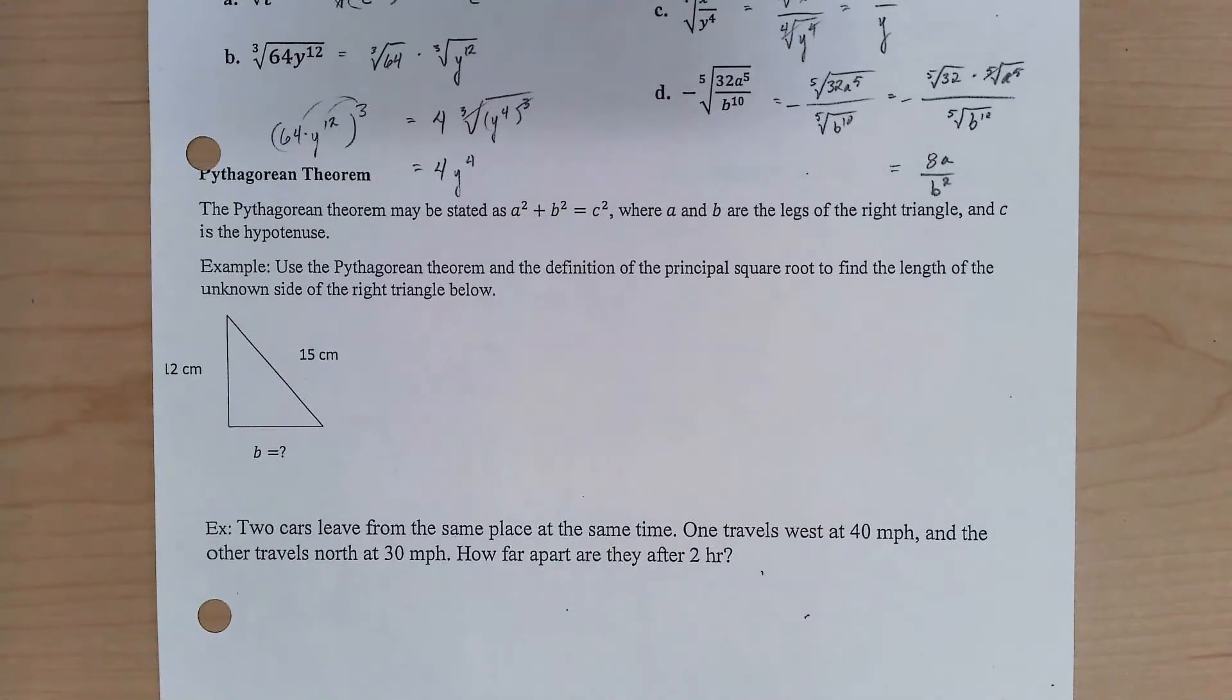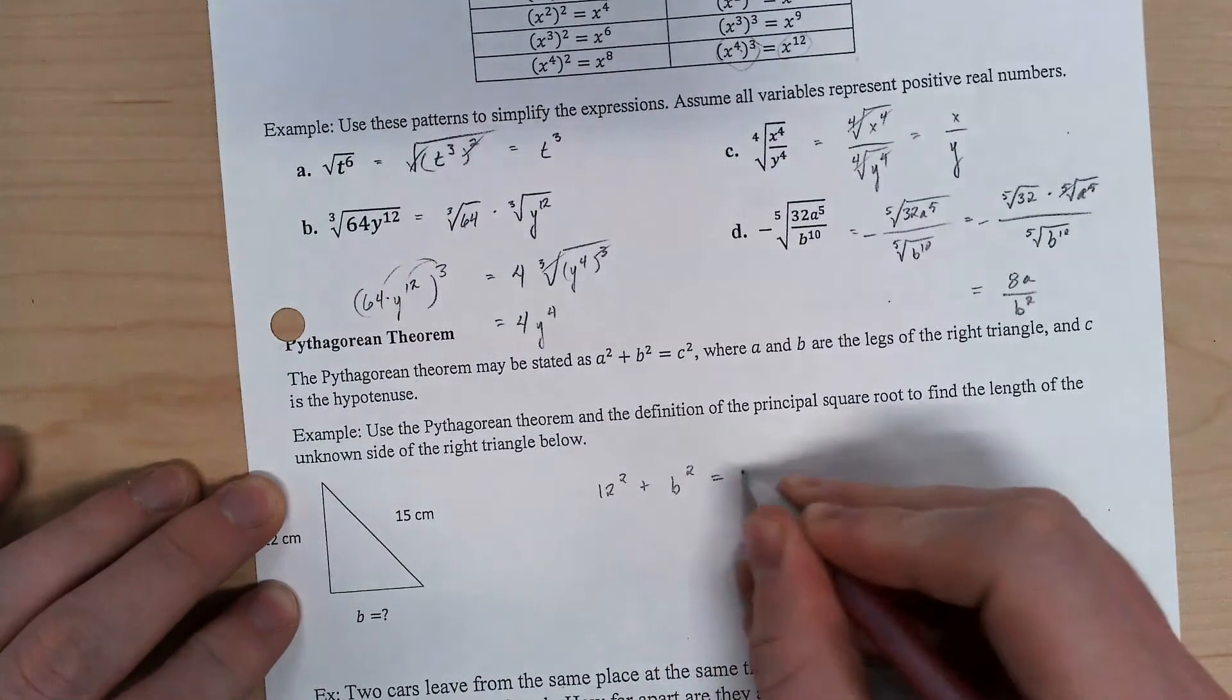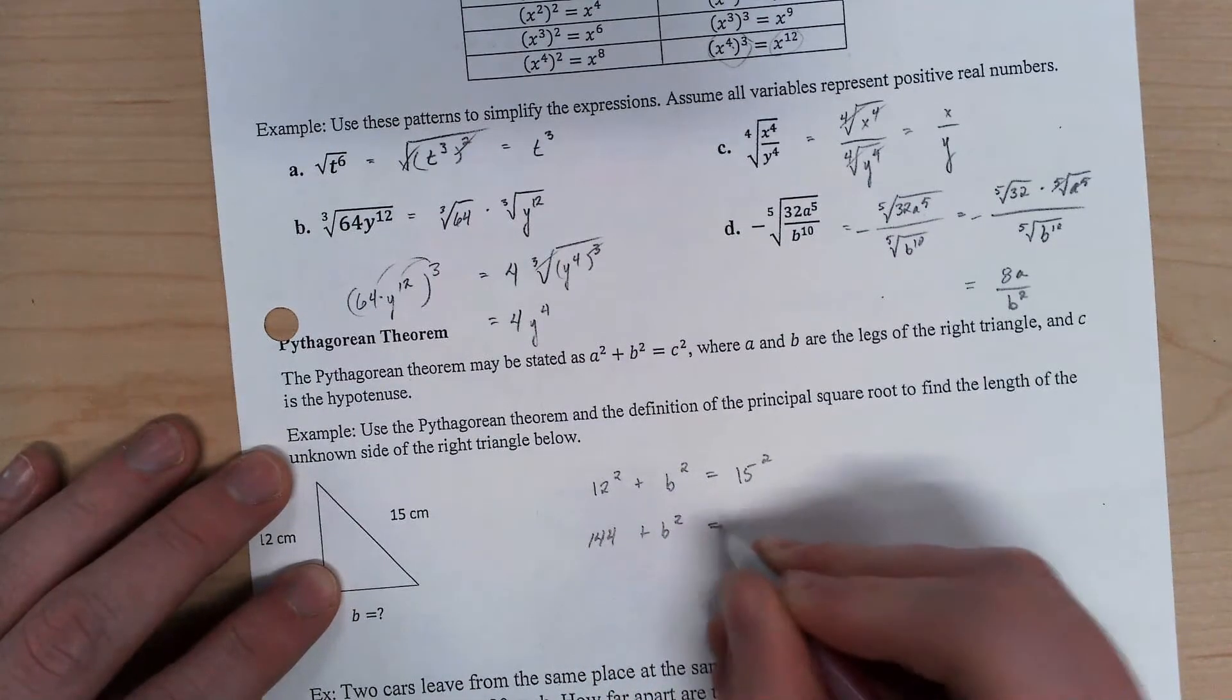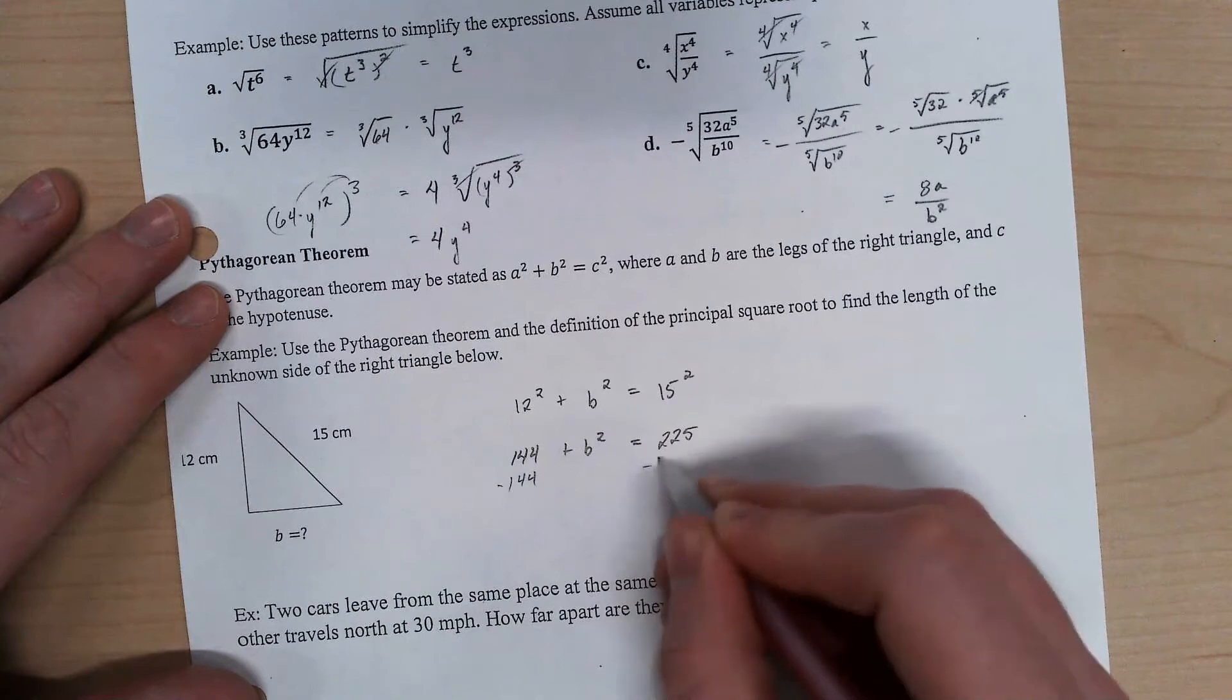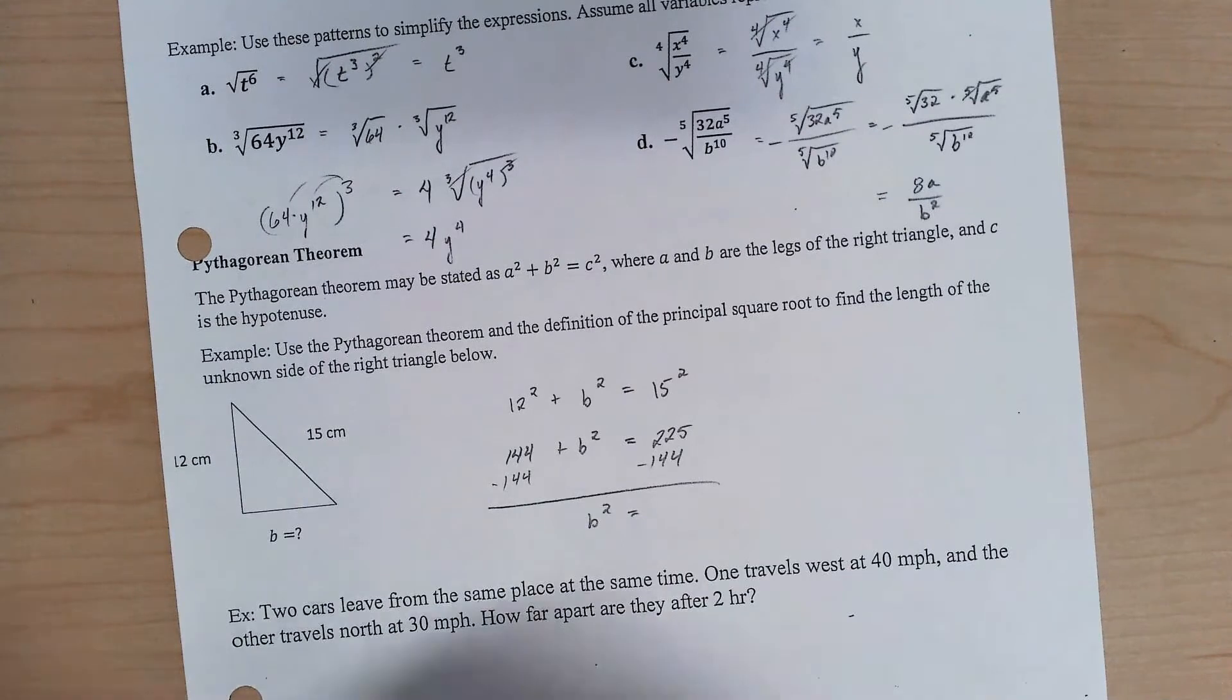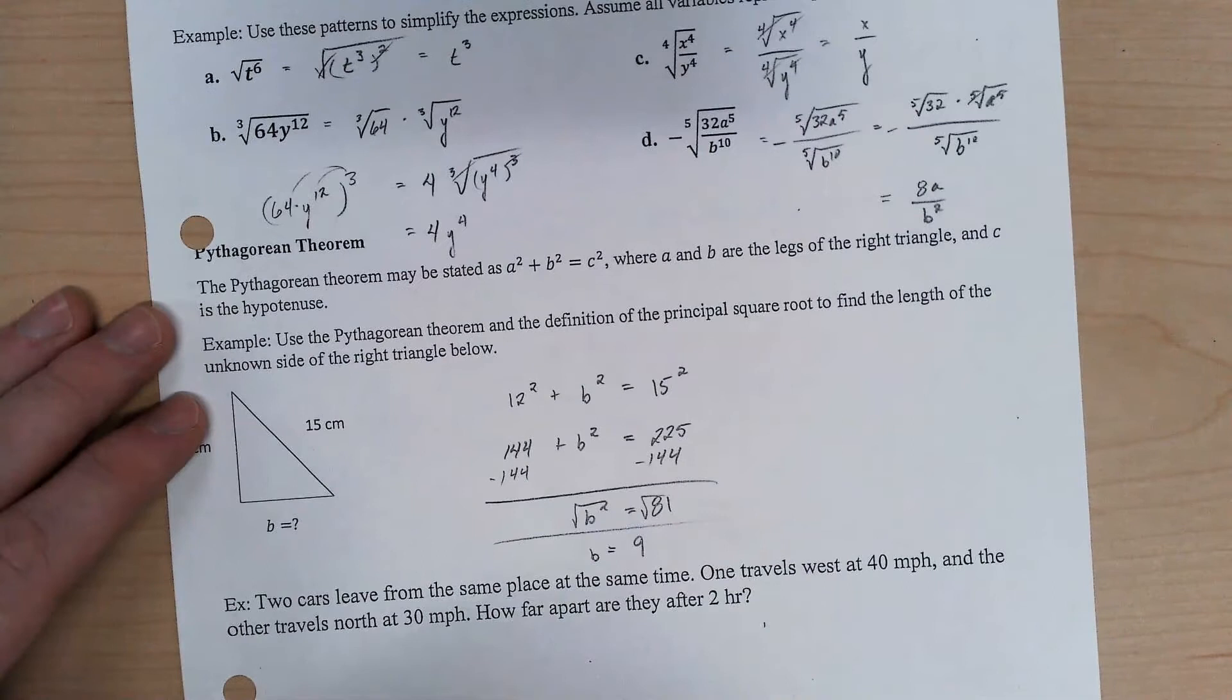So what about our Pythagorean theorem? That's probably the most familiar instance you have of using square roots. If I use my Pythagorean theorem, I've got that 12 squared plus b squared equals 15 squared. 12 squared is 144. 15 squared, I should know that one. It's 225. I'm going to track my 144 over. We get 81. And you would have square rooted both sides. B is 9 centimeters.